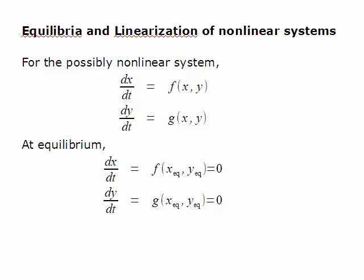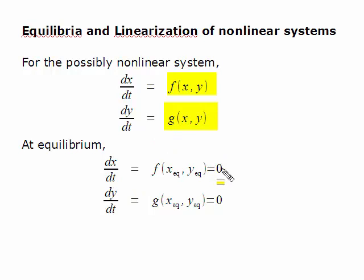We'll start by looking at linearization, assuming that the equilibrium points have been found. We'll write the nonlinear system in general as dx/dt equals some function f of x and y, and dy/dt equals some function g of x and y. Note that these are autonomous to make things easier, and we're only using two-dimensional systems. At the end of the homework, I gave an example for a three-dimensional nonlinear system, the Lorenz equation. Recall that at equilibrium, these derivatives are zero.